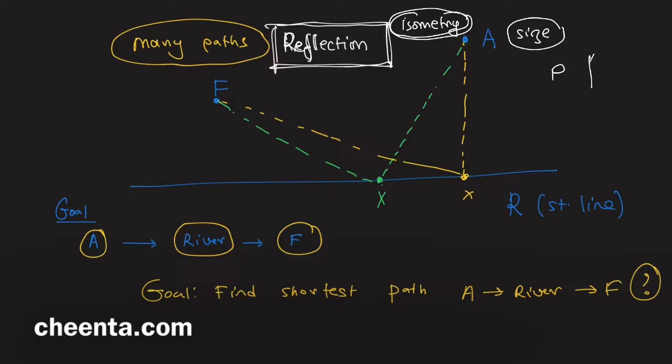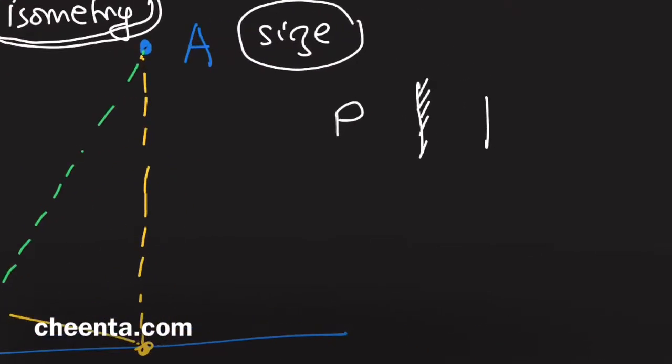There is a precise meaning of the word isometry, but for the moment, if we have the letter P and if we reflect it about a mirror, then the reflected image will have the same size. A more precise meaning of isometry is this: if you take any two points on P and if you take the image of those two points, so image of point A is A prime, image of B is B prime.